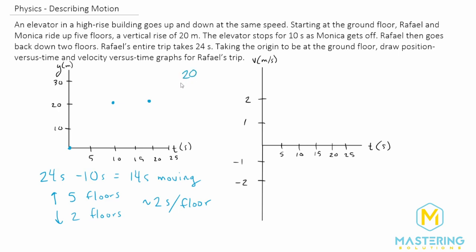So 20 divided by five floors, meters and floors gives us four meters per floor. So now when we go down two floors, now we went down eight meters.